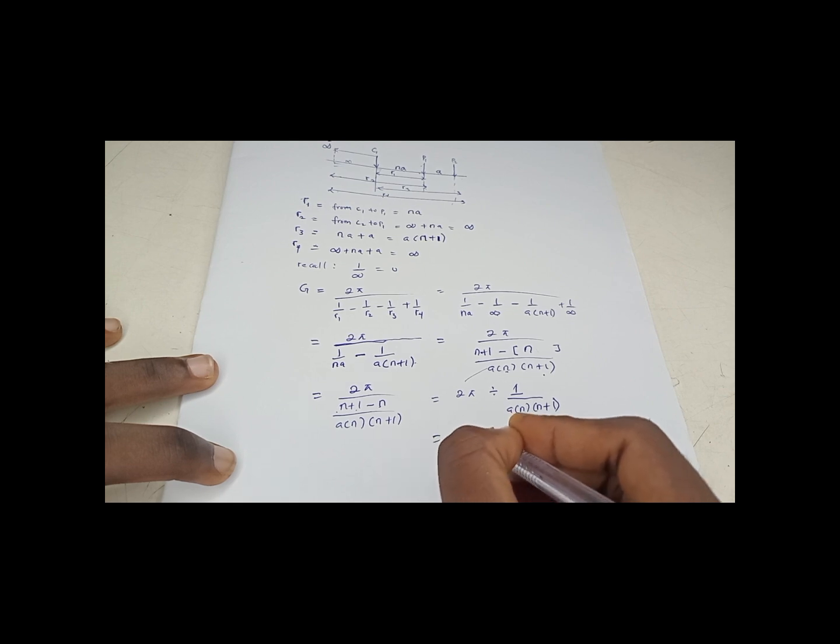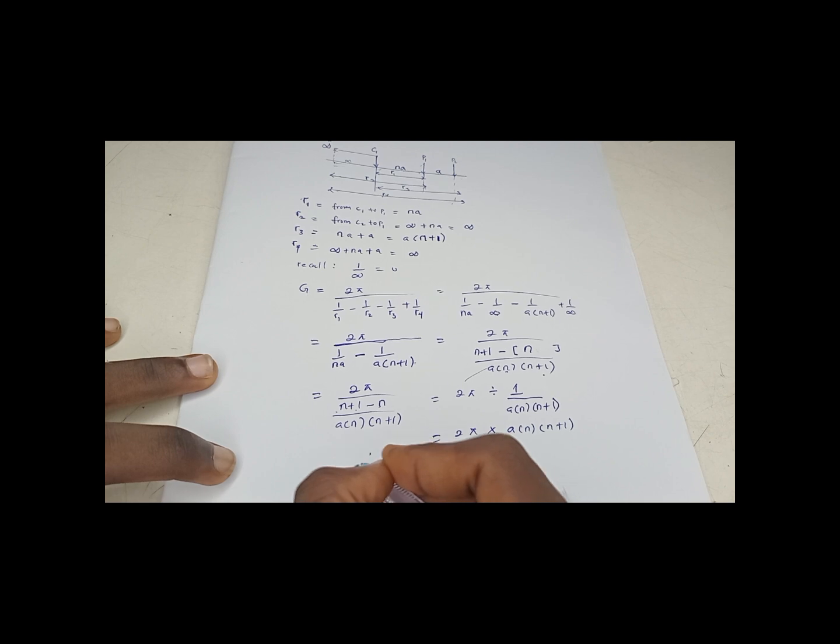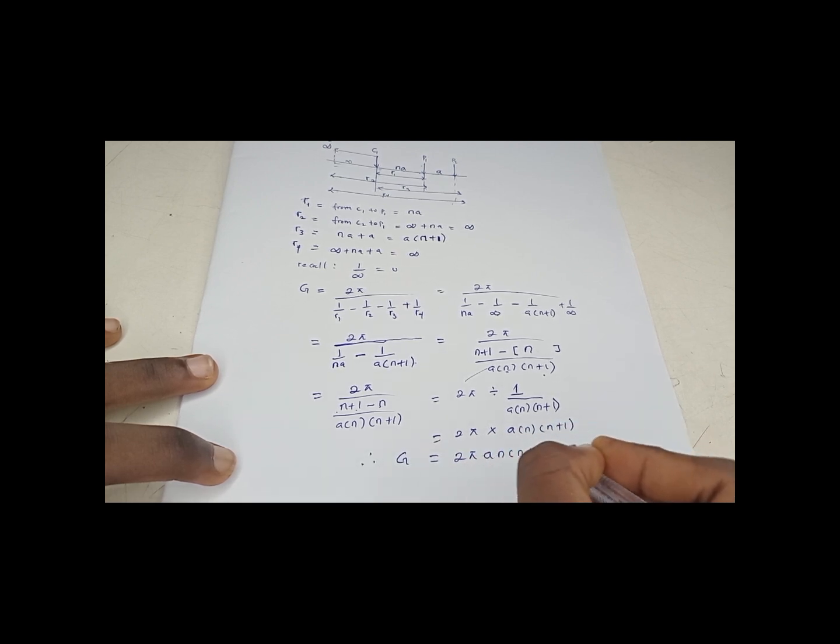So we have 2π times A times N times (N plus 1). So this is your geometric factor for pole-dipole array.